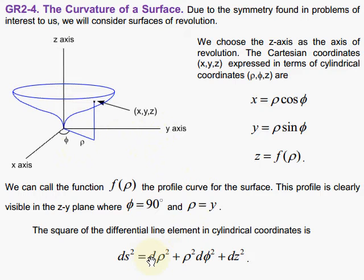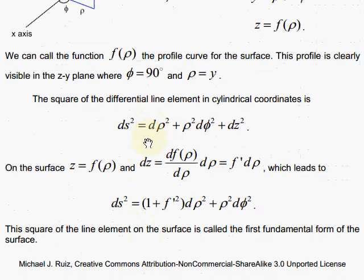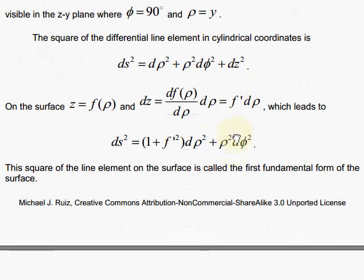So in cylindrical coordinates, we have the arc length given by dρ² + ρ²dφ² + dz². And since the z is constrained to our function, we can think of the dz as f prime—that's the derivative of f with respect to ρ times dρ. So that gets the dz expressed in terms of dρ.